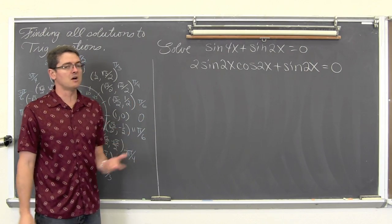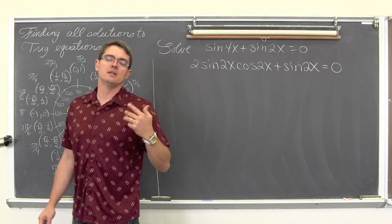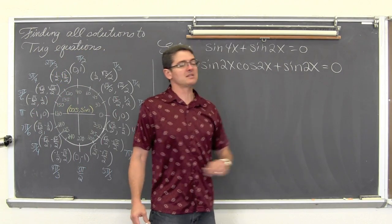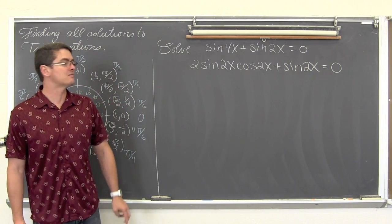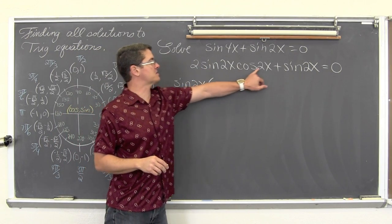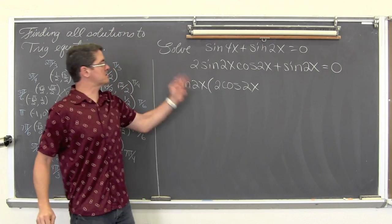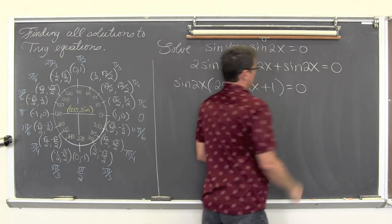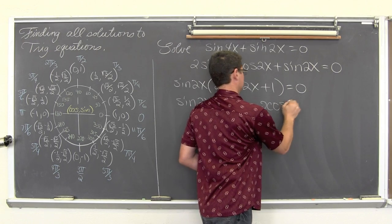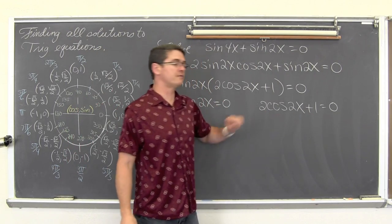So we are getting closer to being ready to solve this. But now we have two different trig functions — sine and cosine — which is again like two variables in the same equation. Except both of these terms have a sine of 2x, so we can factor that out. Undistributing that sine of 2x, we get sine of 2x times 2 cosine of 2x plus 1 equals zero. We have factors to set each one equal to zero. Sine is already alone, so we subtract 1 and divide by 2 for the other factor.